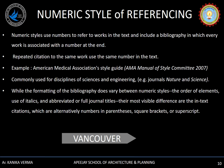The second style is the numeric style of referencing, which refers to work in the text and includes a bibliography where every work is associated with a number at the end. Wherever the citation is repeated within the body of work, the same number is used. AMA is a well-known example, and disciplines like science and engineering practice numeric style. The most visible differences are in in-text citations, which are alternatively numbers in parentheses, square brackets, or superscript.